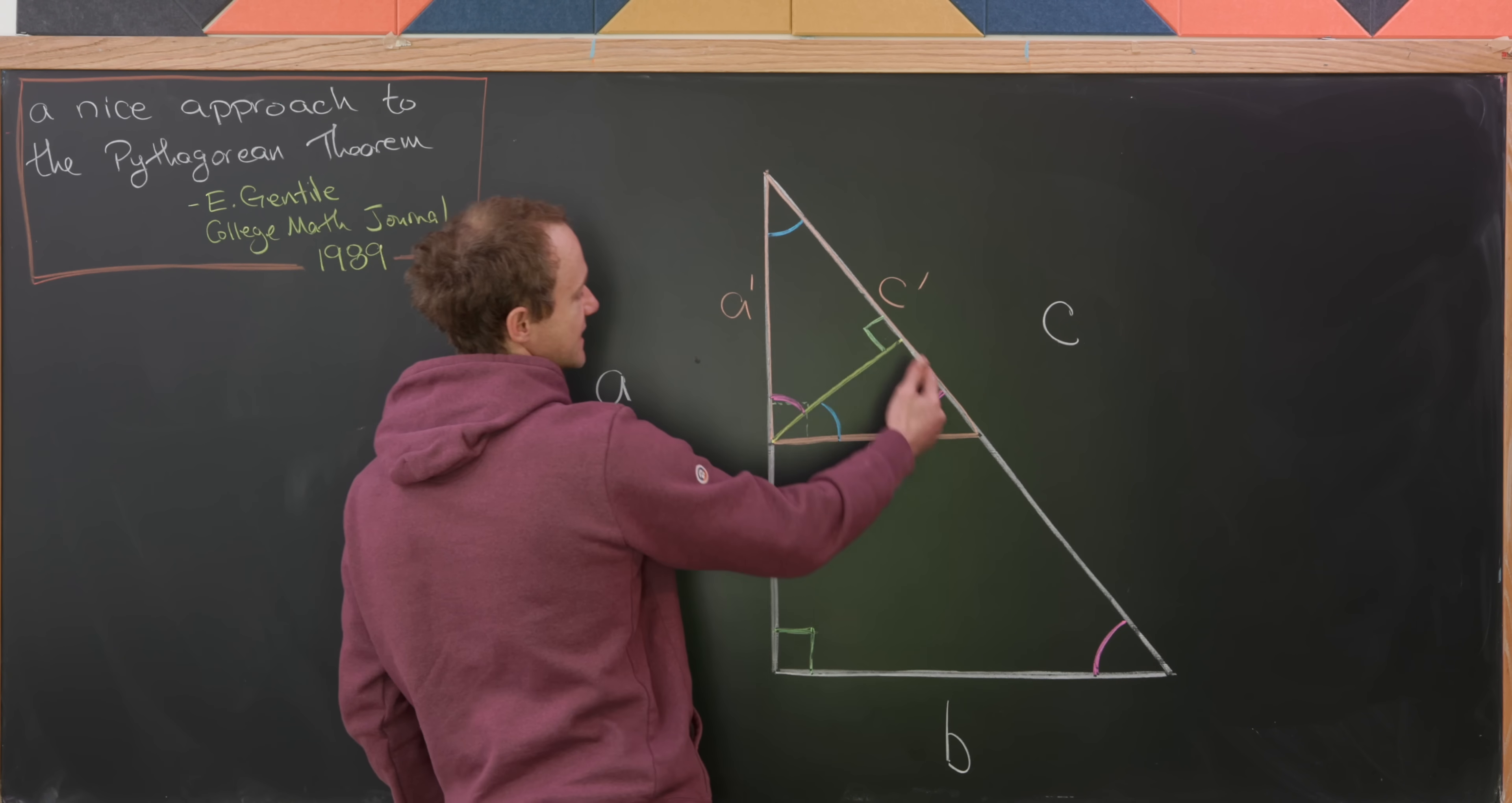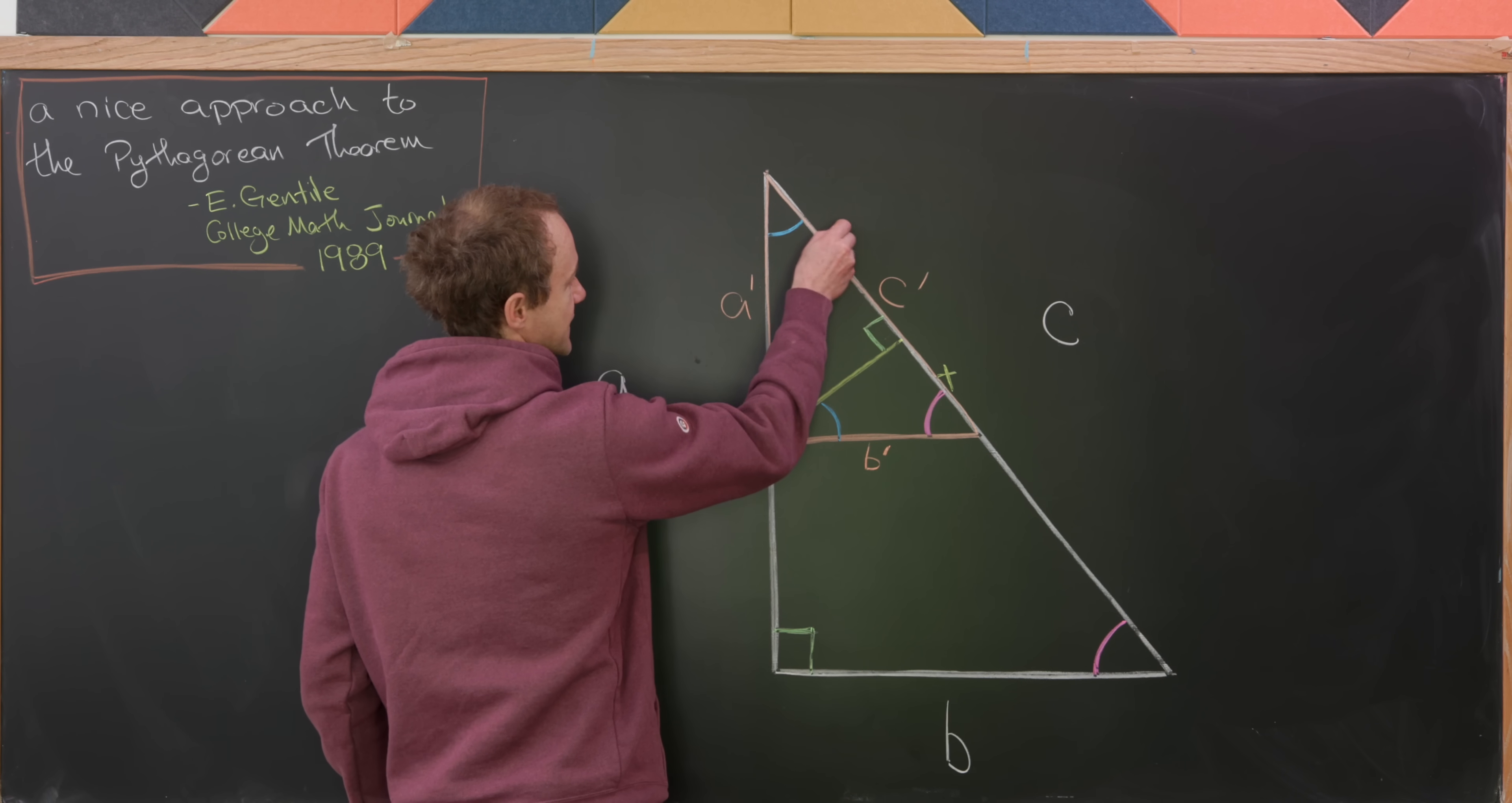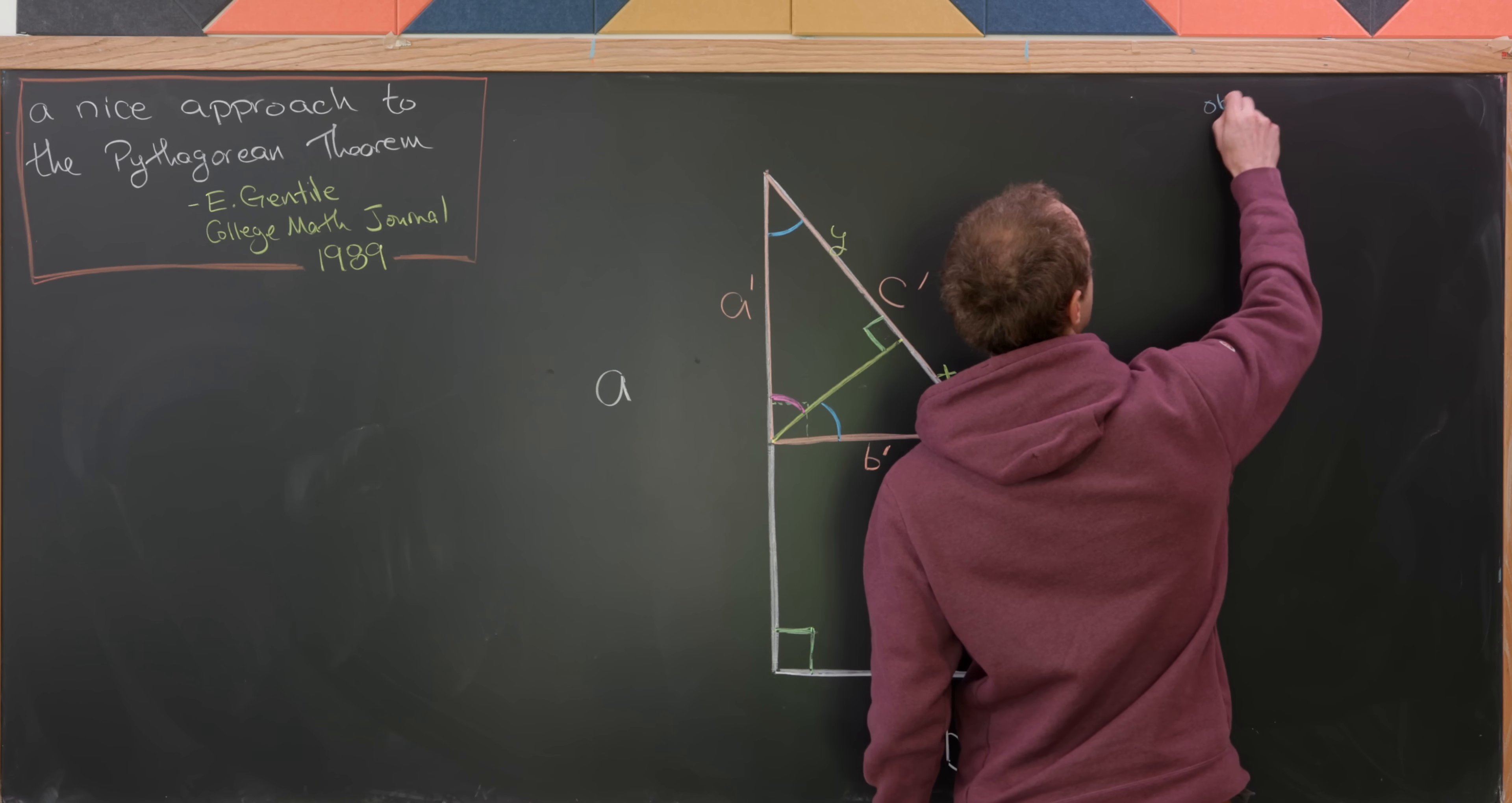I'm going to take this line segment with length c prime and break it into two pieces based off of this yellow line segment that has pushed to intersect it perpendicularly. I'll call this length right here x, and I'll call this length right here y. So we know that x plus y is equal to c prime. And now from this picture, I'm going to make an observation having to do with all of the similar triangles on the board.